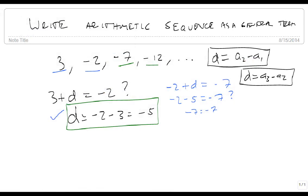What if instead of the recursive form, we want the general term? So what we're going to do instead is we're going to compare this to the default general form which is an equals d times n minus 1 plus a1.